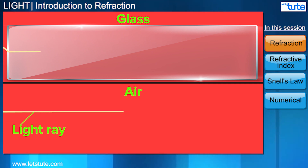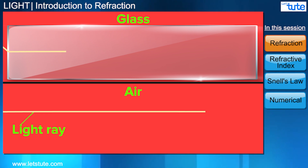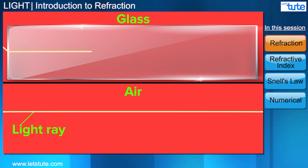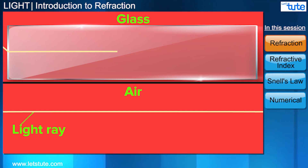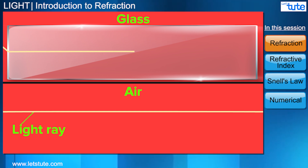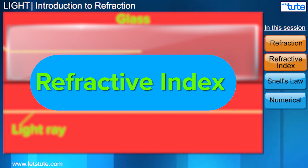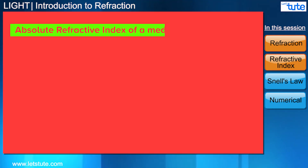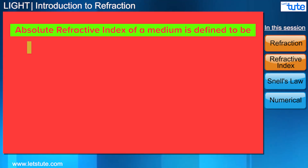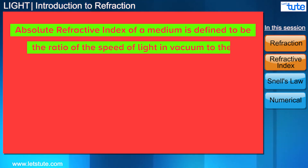We can see that refraction essentially depends upon the speed of light in a material. This is an important concept — so important in fact that we have a word to describe the speed of light in a material when compared to the speed of light in vacuum. It's called the refractive index.